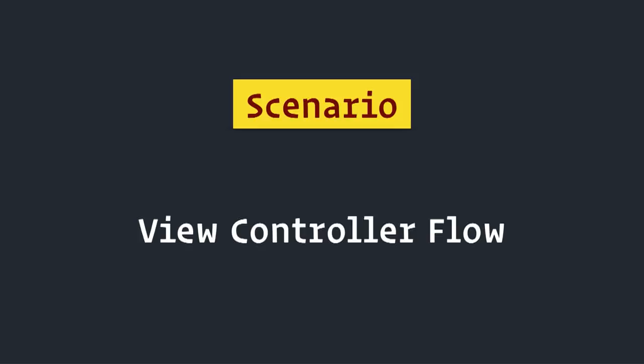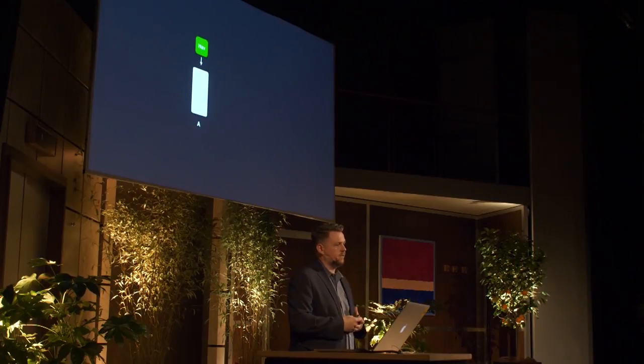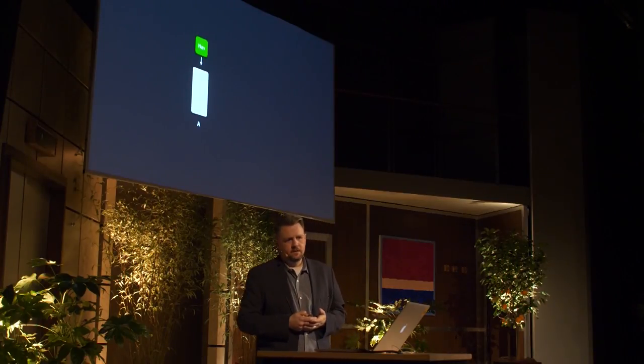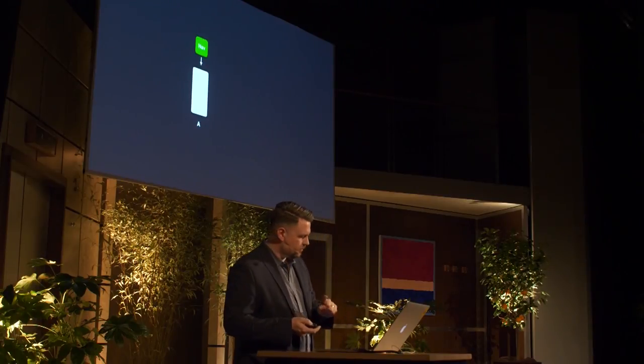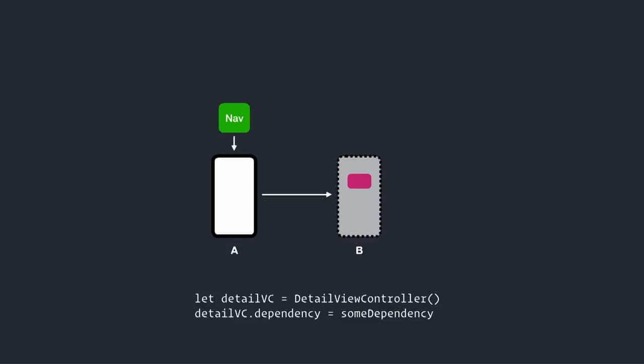Now let's move to another scenario: view controller flow. Imagine a view controller embedded in a navigation controller — say, a list of content. The user taps a button in view controller A and wants to present view controller B. So we create an instance of B, pass along dependencies like the model we just tapped on or a managed object context, and then tell the navigation controller to push that view controller. The application is ready; that feature works.